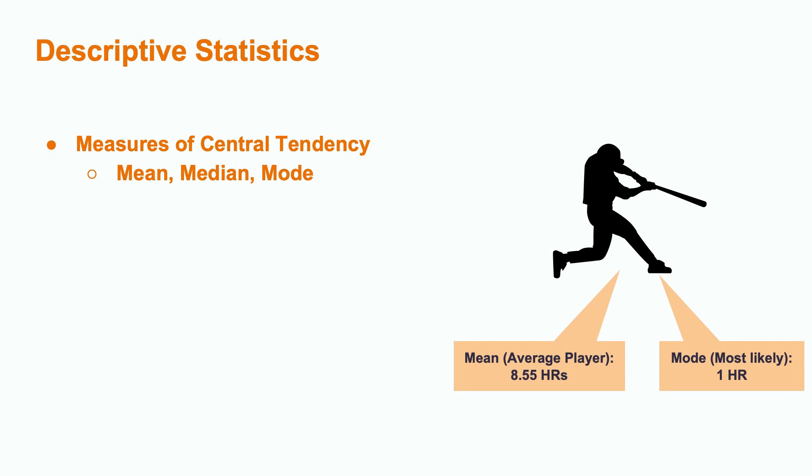Some basic examples of data analysis include descriptive statistics. This includes measures of central tendency, like the mean, median, and mode. In our example, the mean number of home runs would be 8.55, which might answer the question what an imaginary average Mets player would do, but the mode, or most frequent result, was only one home run. So that would be the most likely answer if you asked any single player about their own home runs.